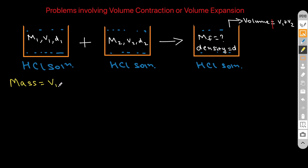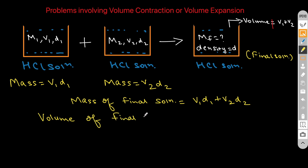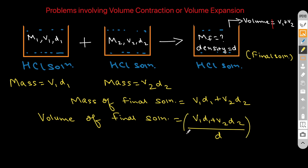To find the final molarity, we first write the mass present in the first container, which is v1 times d1, and the mass in the second container is v2 times d2. The mass of the final solution equals the sum of both: v1·d1 plus v2·d2. The volume of the final solution can then be written as mass divided by density, which gives us (v1·d1 + v2·d2) divided by d.